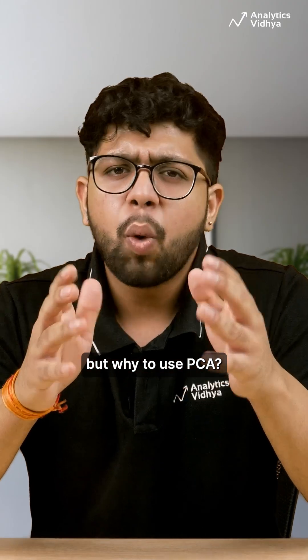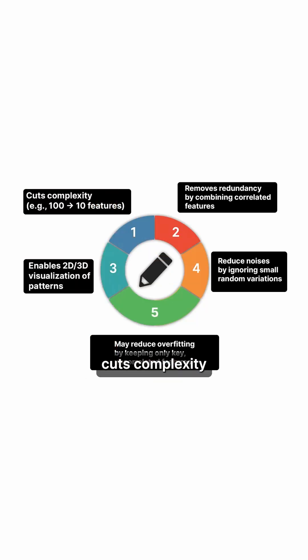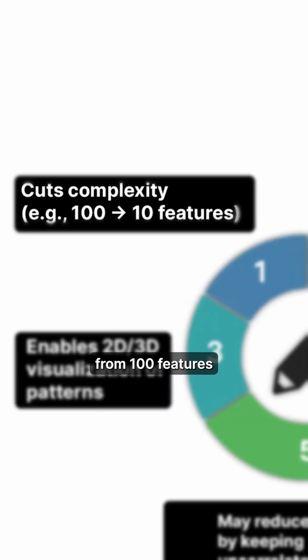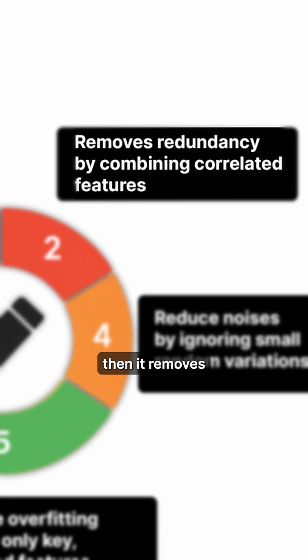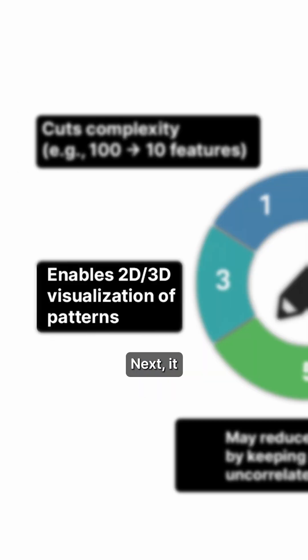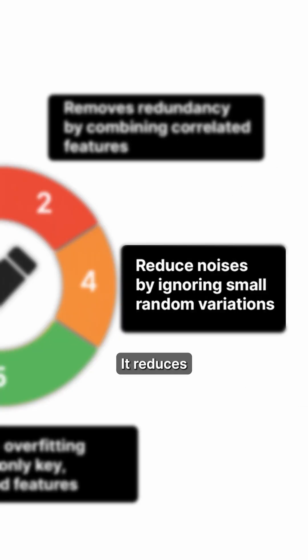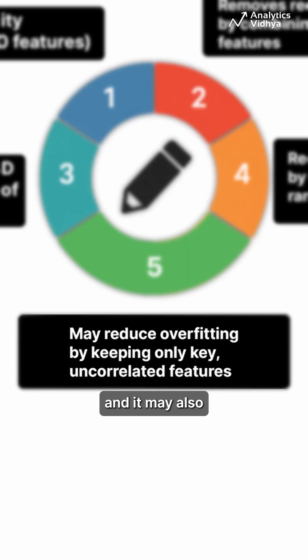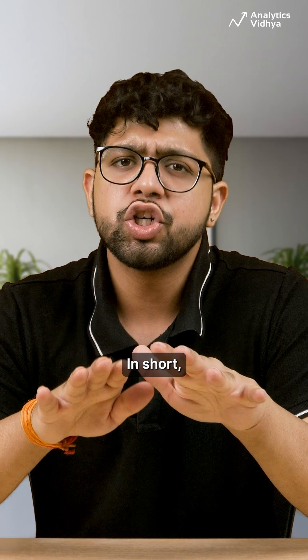But why use PCA? Because it cuts complexity — for example, from 100 features to 10. It removes redundancy by combining correlated features. It enables 2D and 3D visualization of patterns. It reduces noise by ignoring small random variation. And it may also reduce overfitting by keeping only key, uncorrelated features.